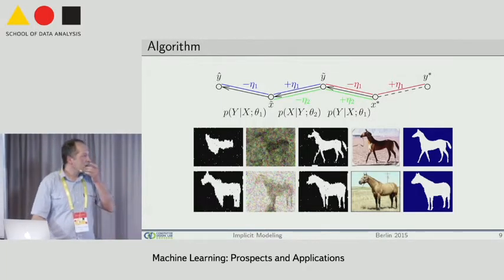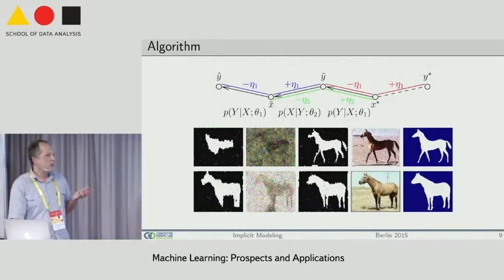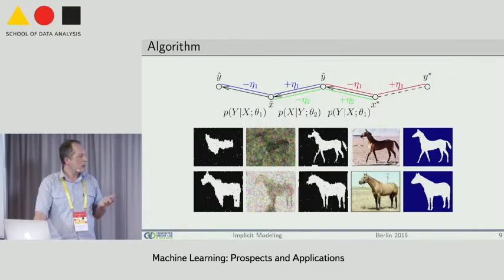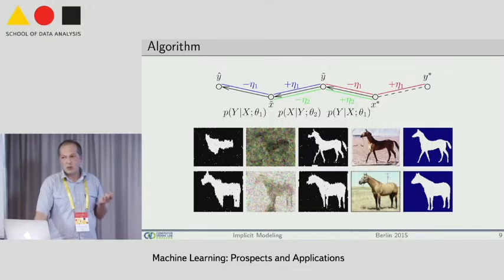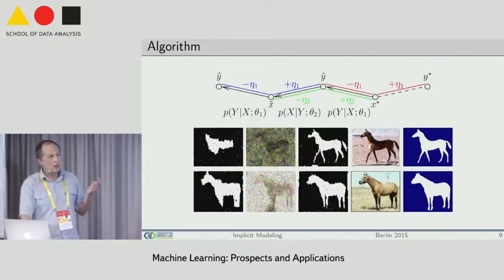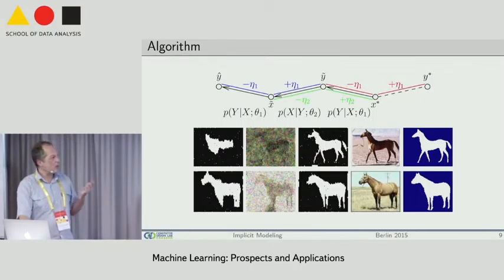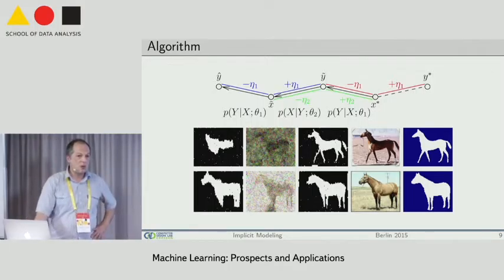This also gives a hint about what families of probability distributions you can model with this approach. It is only necessary that you are able to sample from the conditional probability and compute the gradient of the log likelihood of the image given the model.